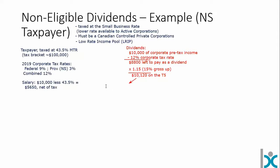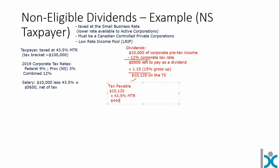Now we're going to calculate the actual tax payable. On that $10,120, we take $10,120 times the taxpayer's 43.5% tax bracket — just like we used over on the left side. That gives us $4,402.20 of tax payable.